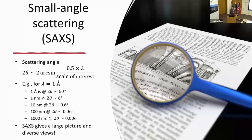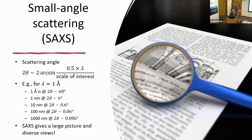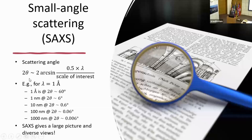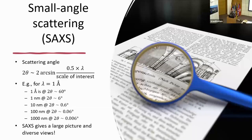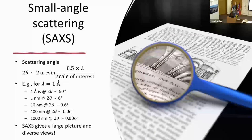I mostly do small angle X-ray scattering. When we do a small angle scattering experiment, we look at different scales depending on the scattering angle. At relatively wide angles — WAXS not SAXS — we look at angstrom scales. As we make scattering angles smaller and smaller, we look into larger and larger structures, and we can basically span the whole structural scale from angstroms to a couple of micrometers.